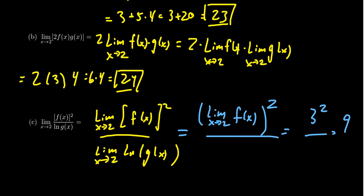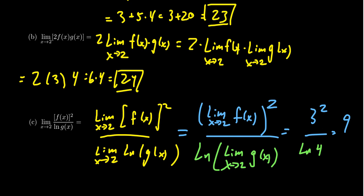Returning to our question: by property H, the limit of the natural log of g(x) as x approaches 2 becomes the natural log of the limit as x approaches 2 of g(x), since the natural log is just log base e. The limit of g(x) was 4, so we get the natural log of 4, which can also be written as 2 natural log of 2. So the final limit of f(x)² over the natural log of g(x) is 9 over the natural log of 4.